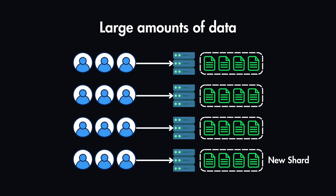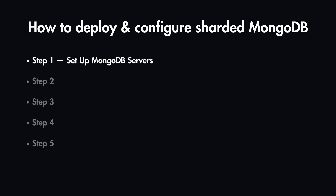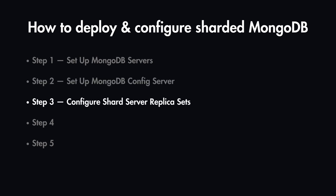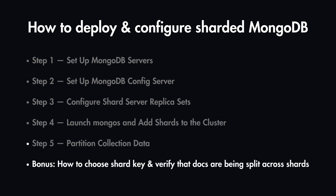In this complete tutorial, you'll learn how to deploy a sharded MongoDB cluster with three shards in five simple steps. First, you'll learn how to set up the MongoDB servers. Next, we will set up the MongoDB configuration server. Then we'll configure the shard server replica sets. After that, we'll launch the mongos query router and add shards to the cluster. And in the final step, we'll partition collection data and check how our data is distributed. Along the way, you'll learn how to choose the sharding key and verify that documents are being split across multiple shards.